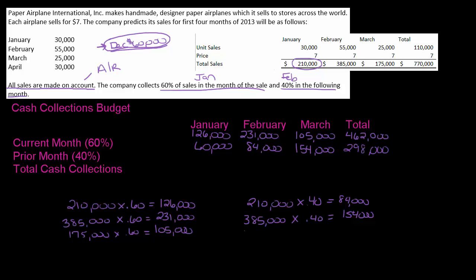Now you might be thinking: what about the 40% of March? Because that didn't go anywhere. So $175,000 times 40% is $70,000 — where does that go? Well, remember what was left from December was in accounts receivable? When you do your balance sheet for this budget, this $70,000 from March is going to go into accounts receivable on your balance sheet. So keep that $70,000 in mind because we're going to need that when we do the balance sheet.